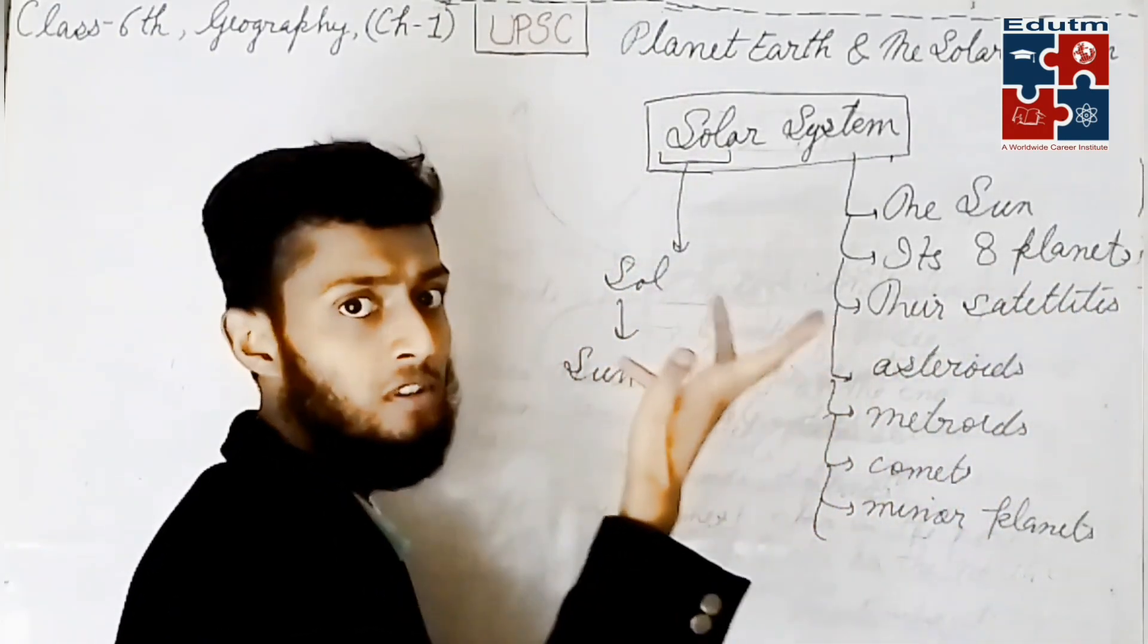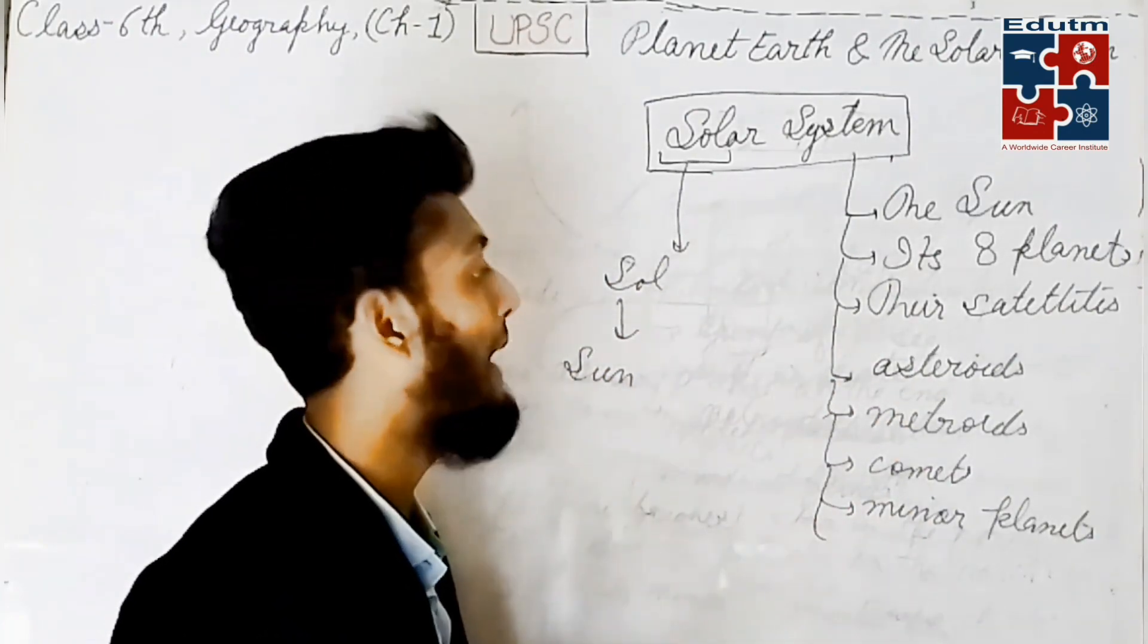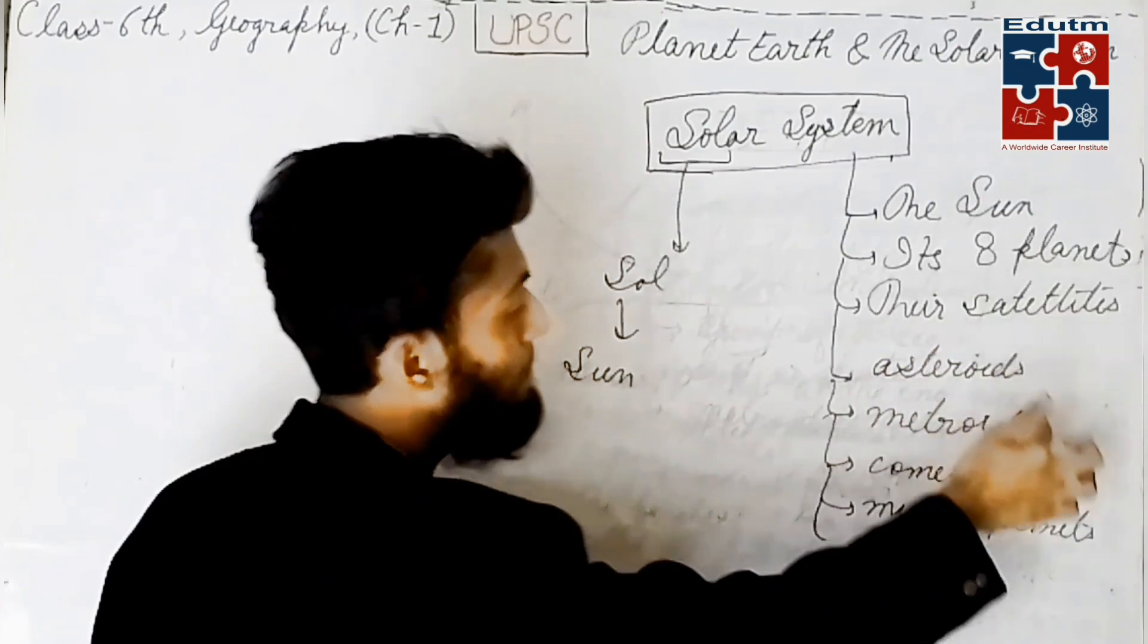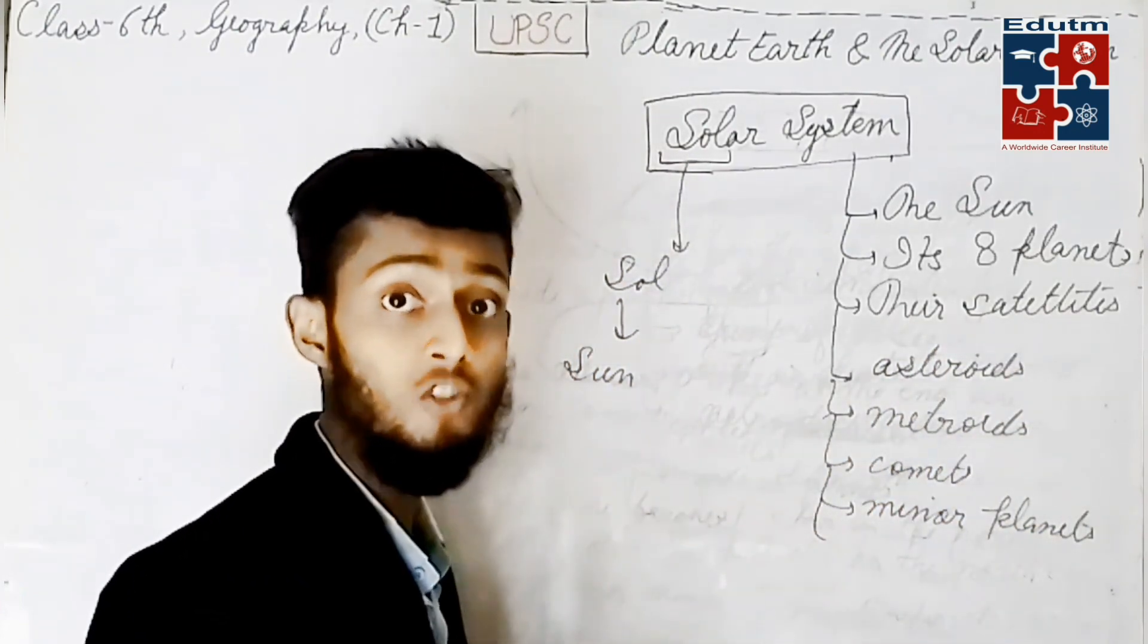There are satellites. Moon is our natural satellite, and there are multiple satellites of different planets. There are asteroids, there are meteoroids, there are comets, there are some minor planets.